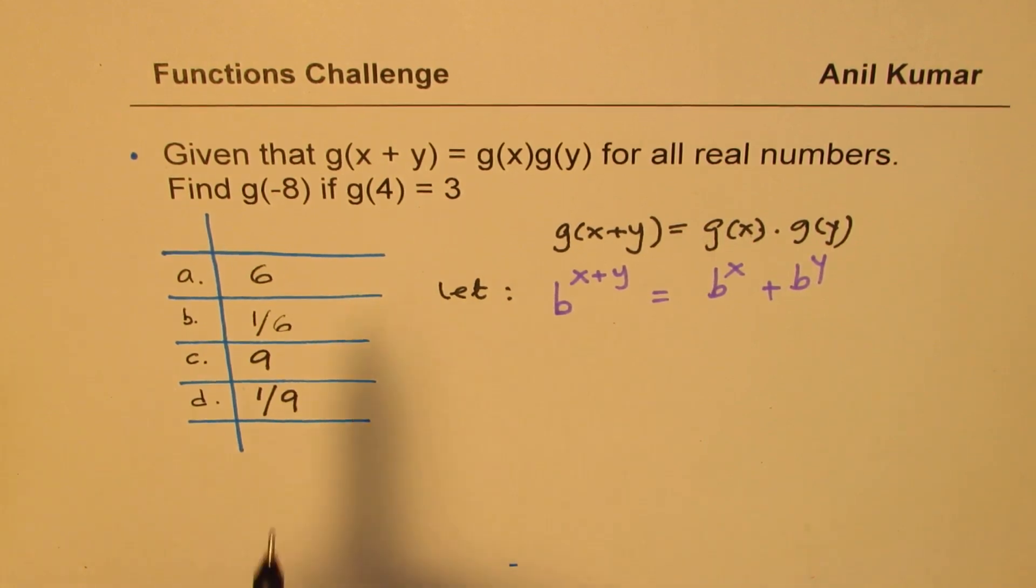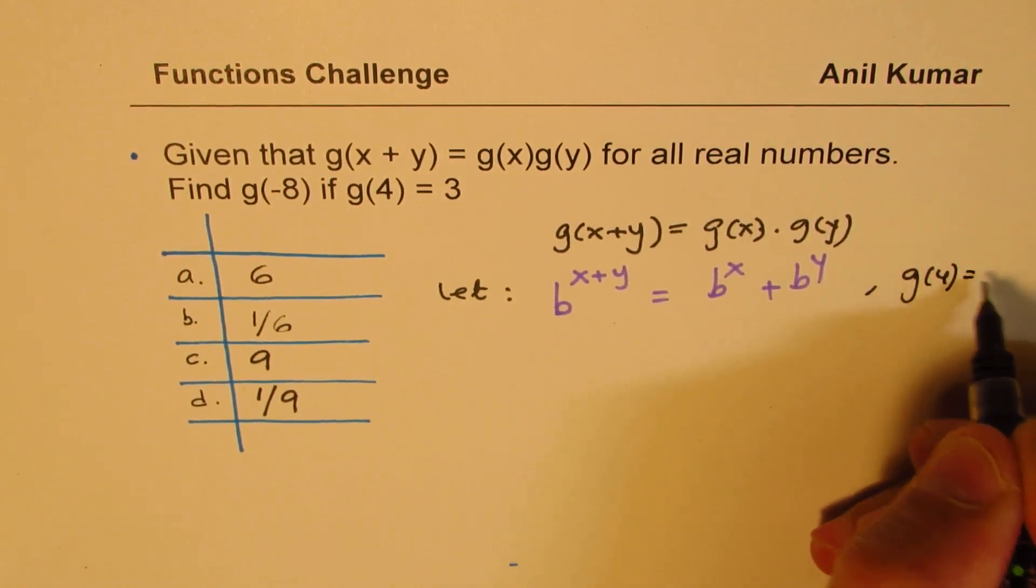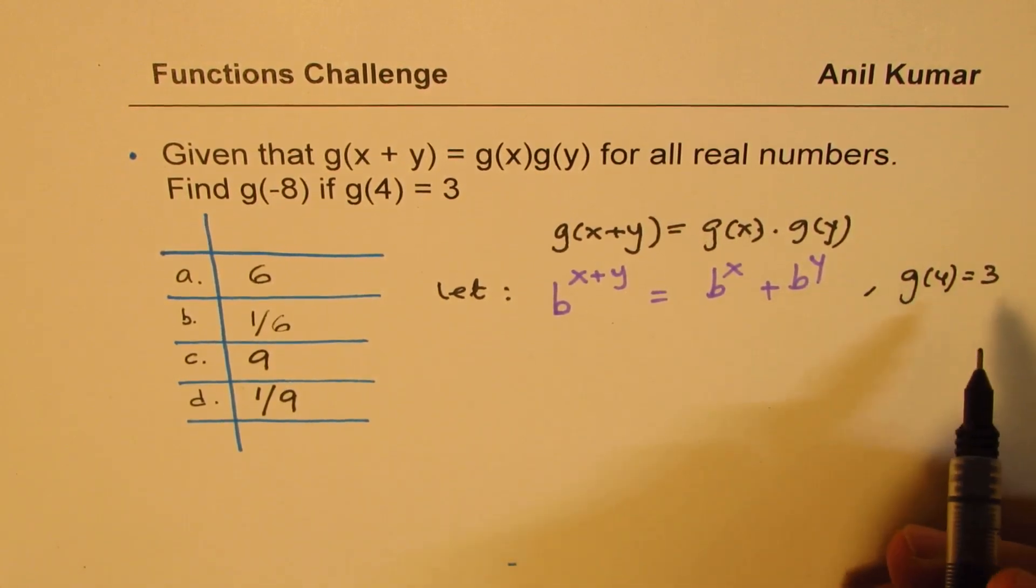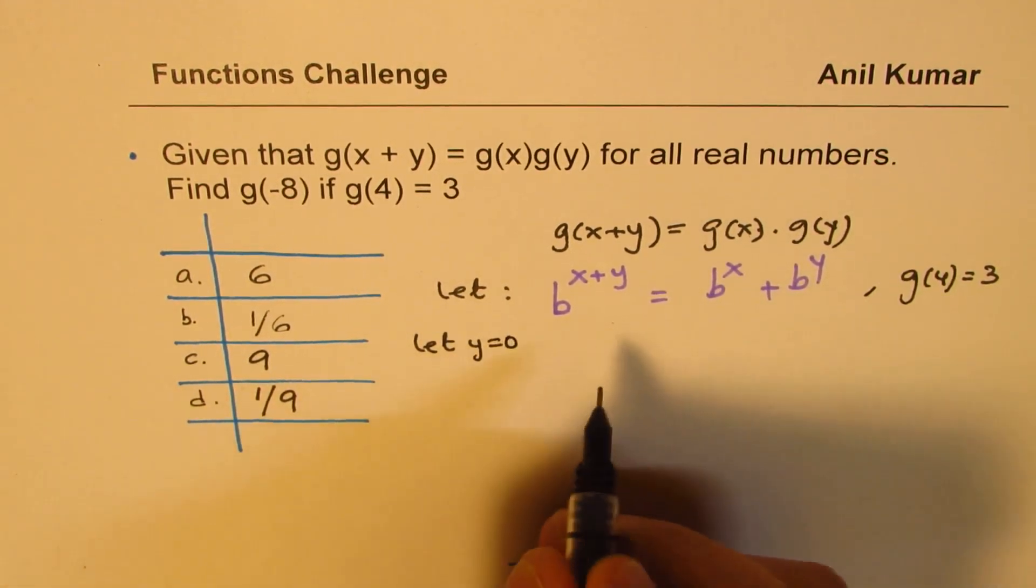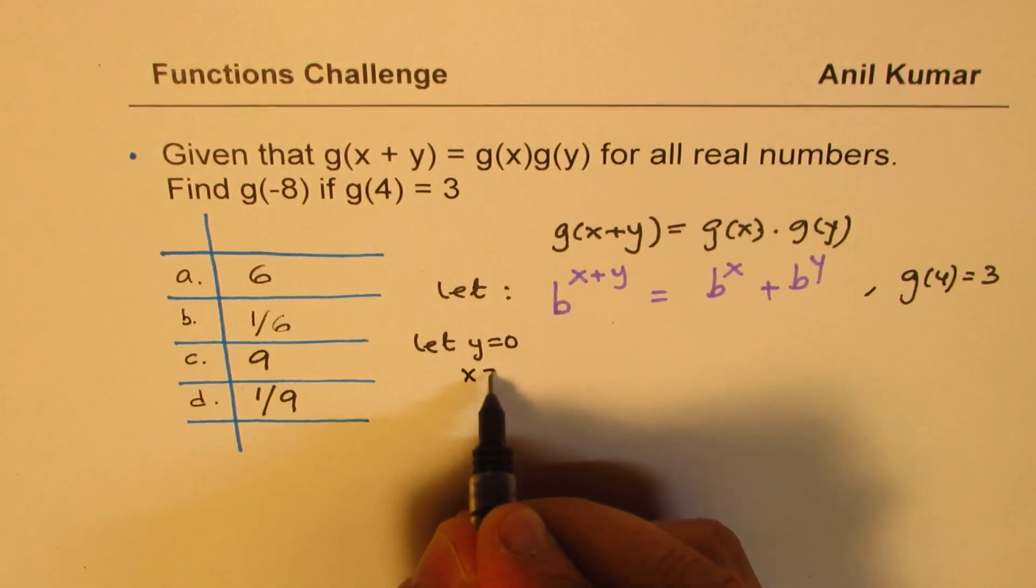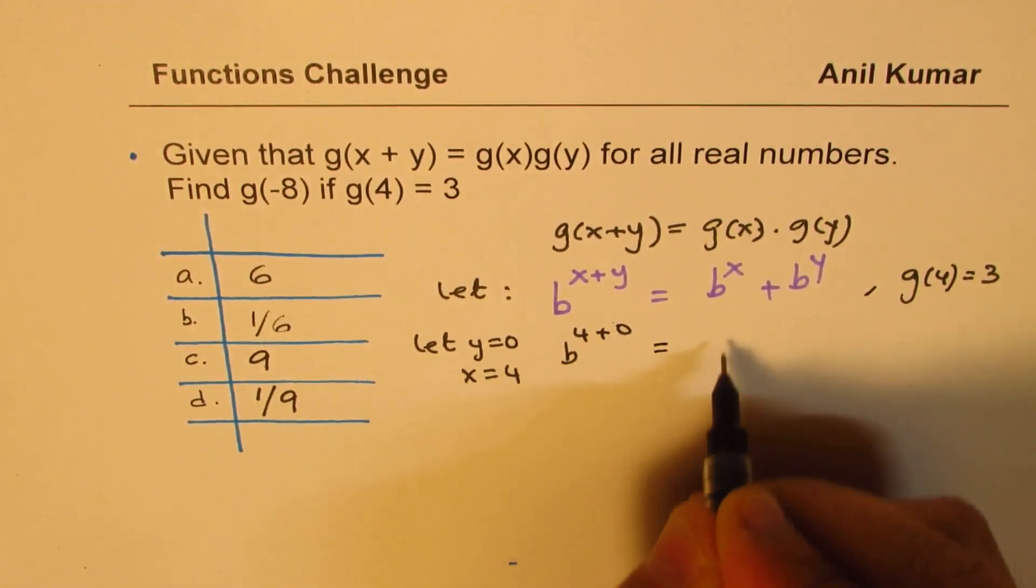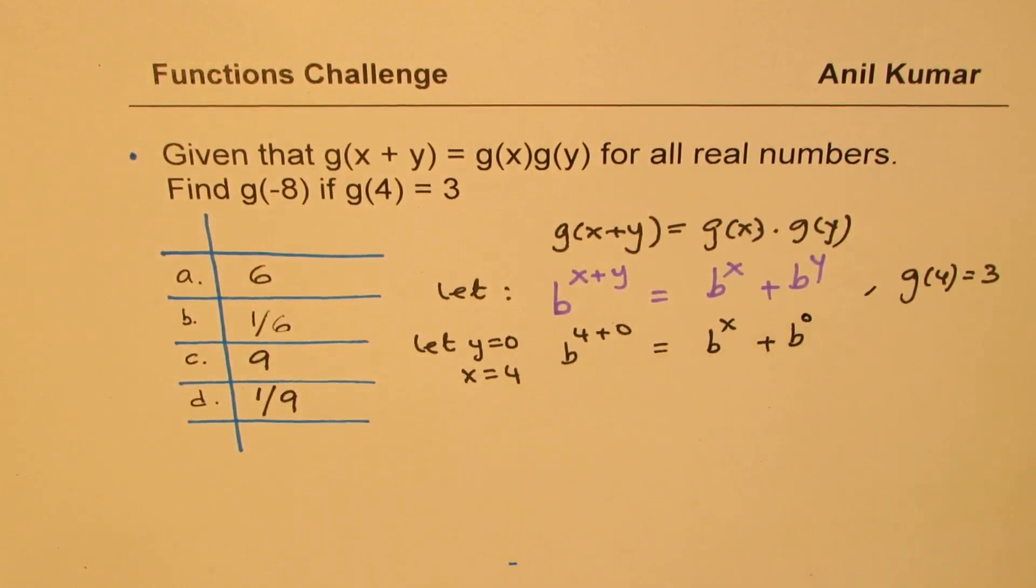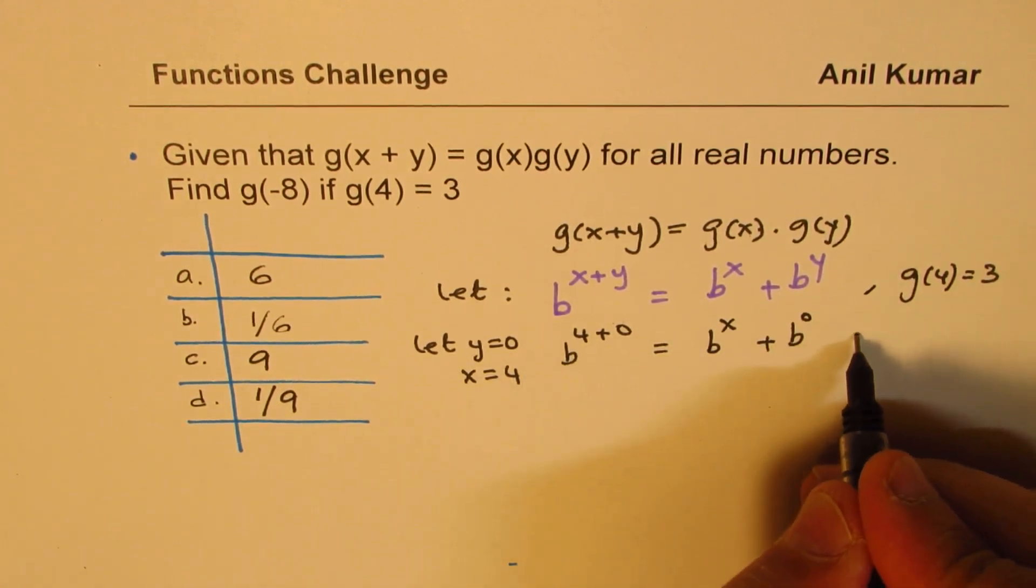What are we given? We are given g of 4 is 3, right? So we are given g of 4 is 3. So to make the problem simpler, I can assume that let y be equal to 0. In that case, for x equals to 4, I get b of 4 plus 0 equals to b of 4 plus b of 0, right? And we know this value itself is equal to 3.